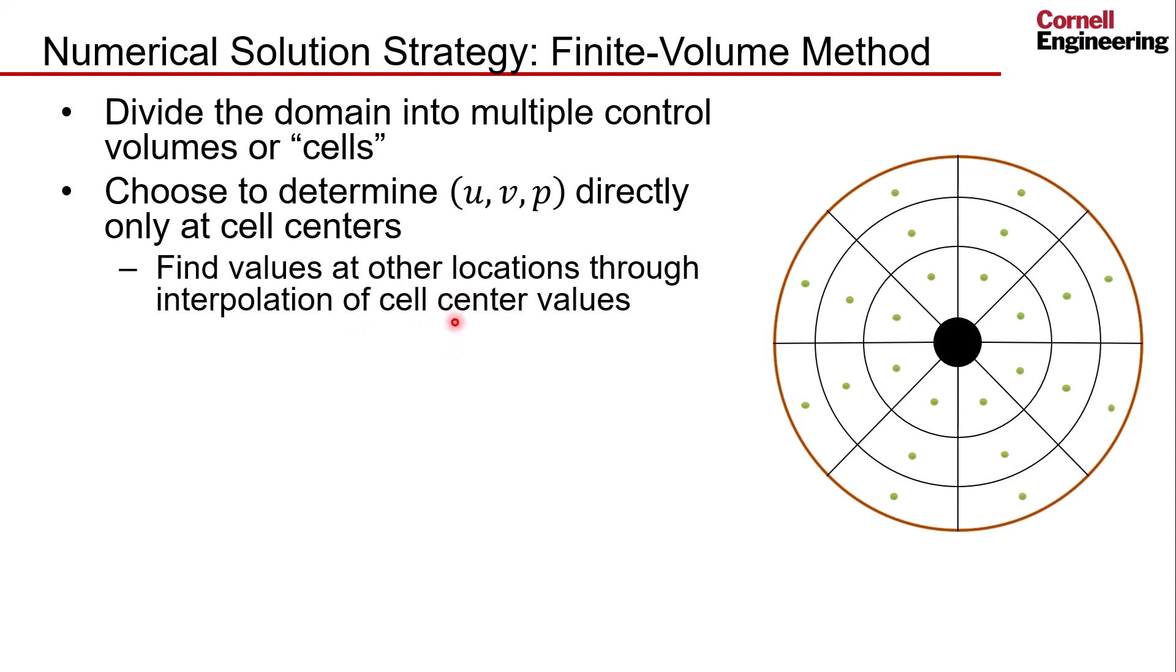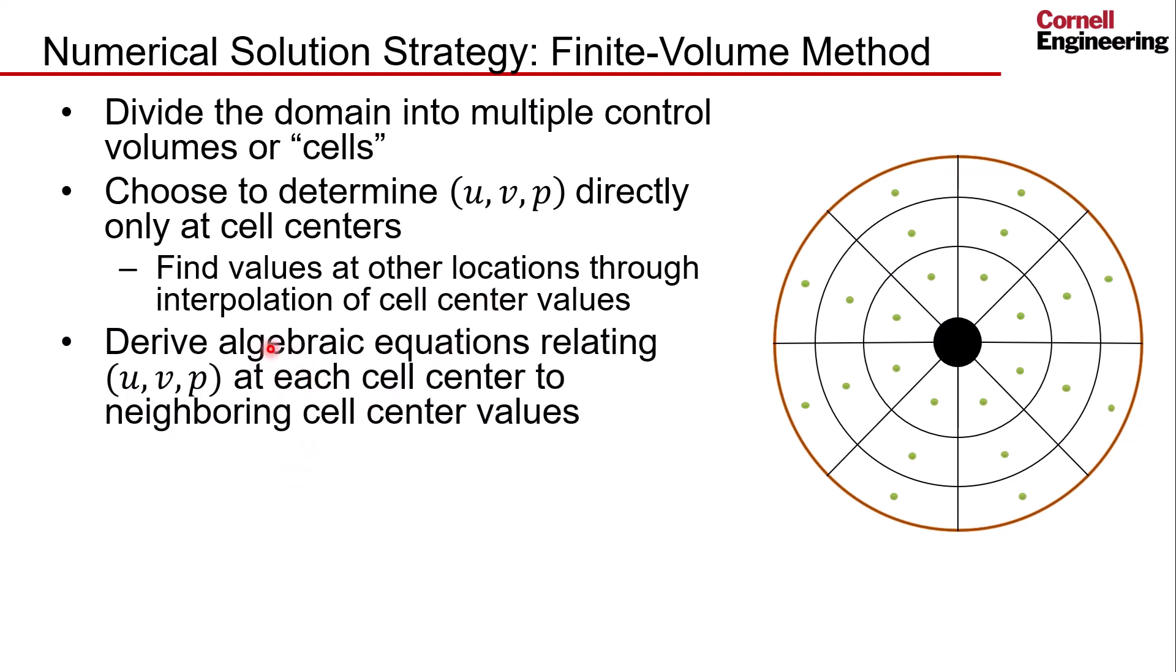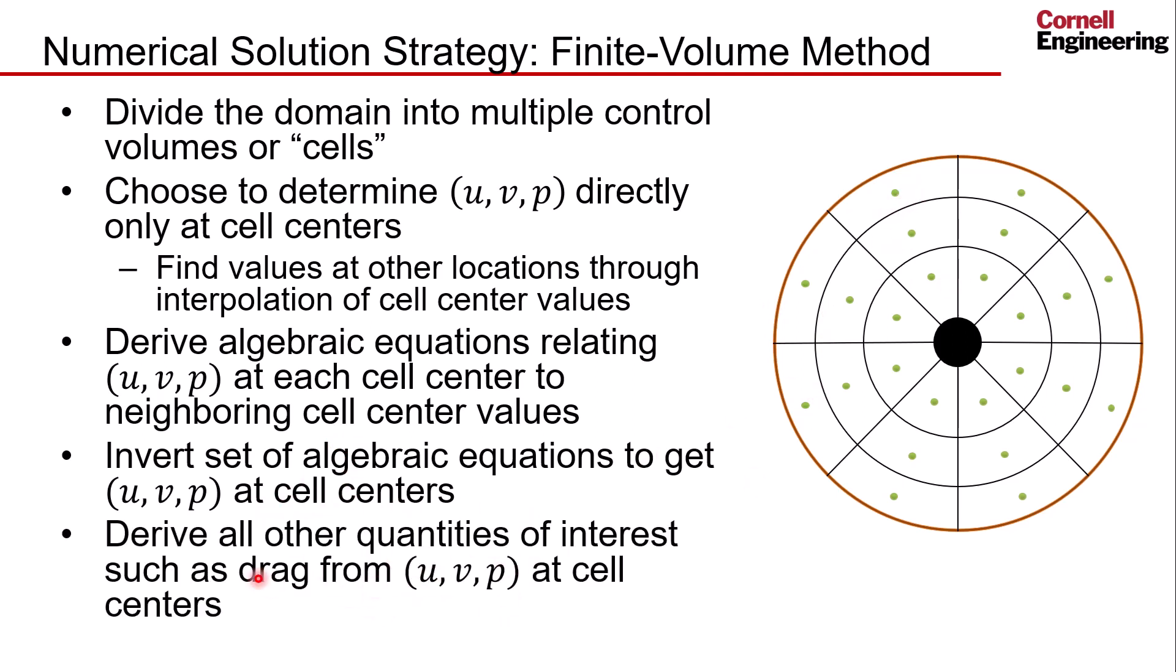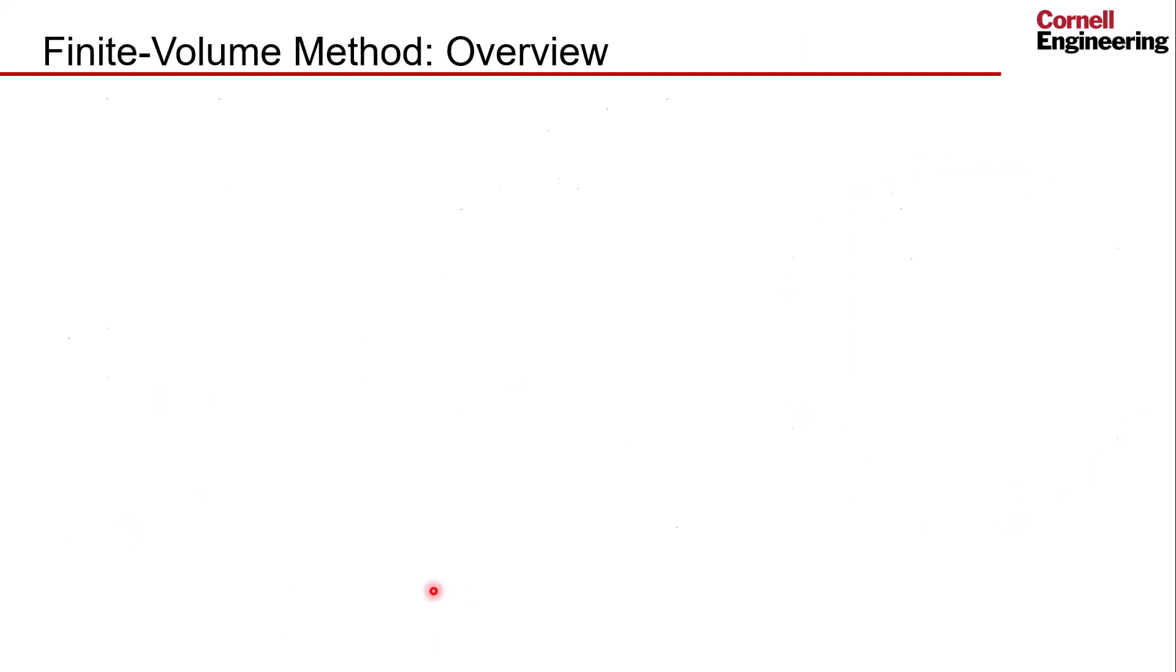We can find U, V, P at other locations through interpolation of the cell center values. What the Fluent Solver will do is it will derive algebraic equations relating U, V, P at the cell centers, then it will invert that to get U, V, P at the cell centers, and then everything else is calculated from that through post-processing.